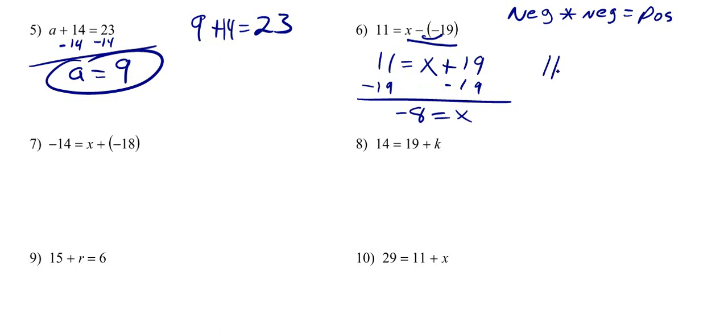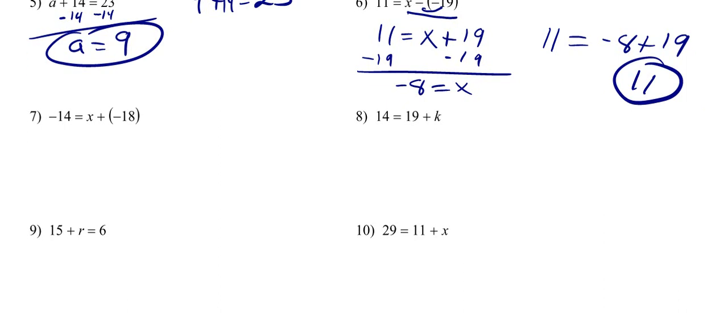Let's see if that works out for us. We've got 11. Is that equal to negative 8 plus 19? You add these two numbers together, you get 11.